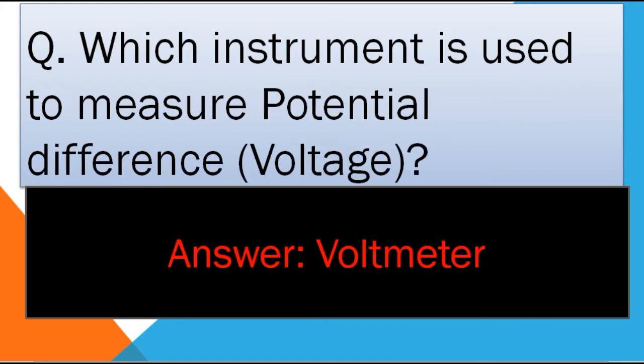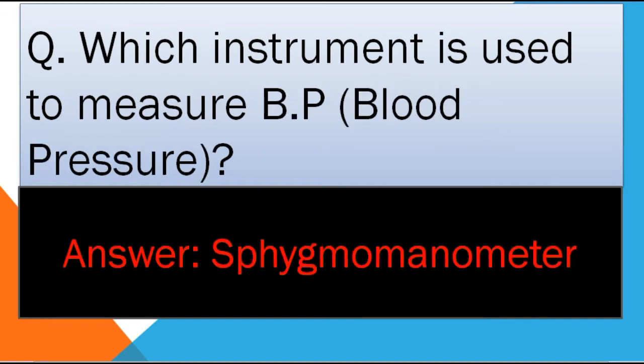Which instrument is used to measure potential difference or voltage? The answer is Voltmeter. Voltmeter is an instrument which is used to measure potential difference or voltage.